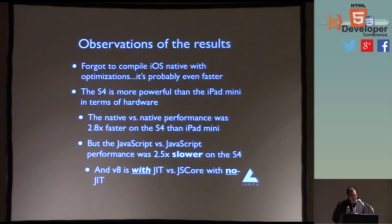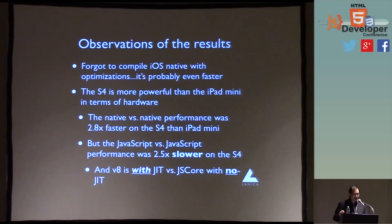You can see that native in all cases was much faster. That 41x in the right column — I'm not missing a decimal point — it is actually 41 times faster in native. That's huge. I also forgot to turn on optimizations in the compile for iOS, so the iOS side might actually be a little faster. Also interesting: the S4 hardware is actually more powerful than the iPad mini in terms of hardware, and you see that in native-versus-native performance. But in JavaScript-versus-JavaScript performance, the Android one is actually slower — 2.5 times slower — and this is with JIT on versus JIT off. All those magical promises about how fast JIT can be: we didn't see any of that.